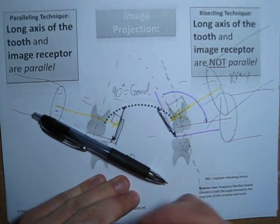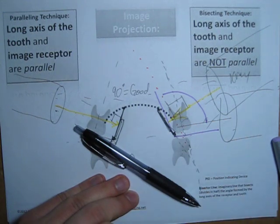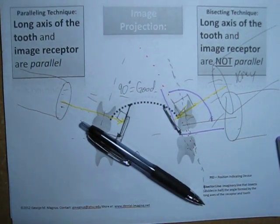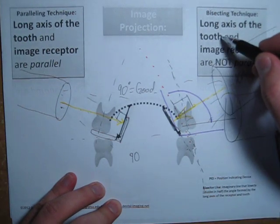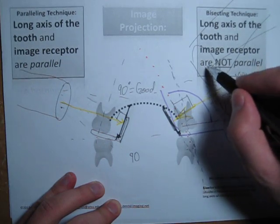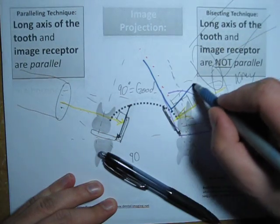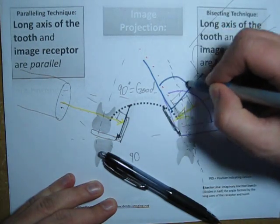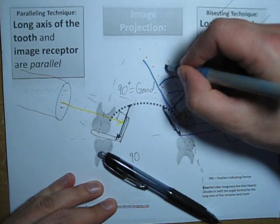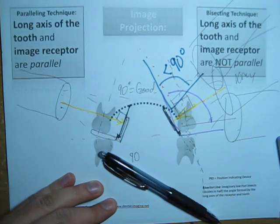And if you were to do less than 90 degrees, you'd get a foreshortened image. It would look something like this. So you would come up really much steeper, and then to the bisector line. So now you have this angle, which is less than 90 degrees. So you have a foreshortened image.